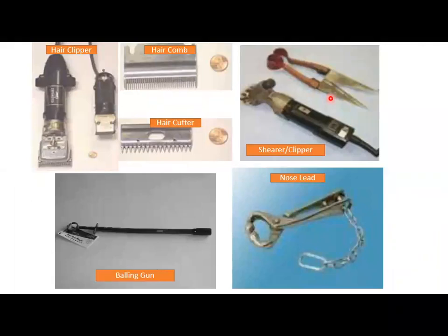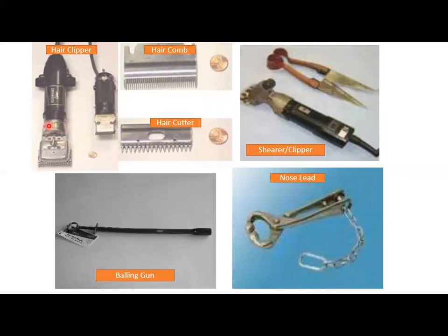This is a hair clipper — a hair removing or hair cutting machine. This small one is for smaller animals and this large one is for larger animals. Sometimes we have to perform tattooing, so we need to remove the hair from the skin of the animal, and this clipper is used for that. The hair comb is also used in animals, especially horses, for combing and beautification. This is a hair cutter blade which is attached and applied on the animals to remove the hair.